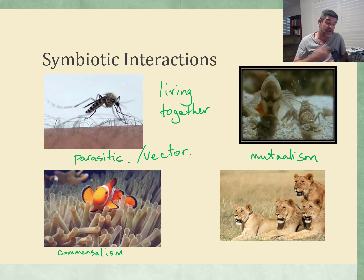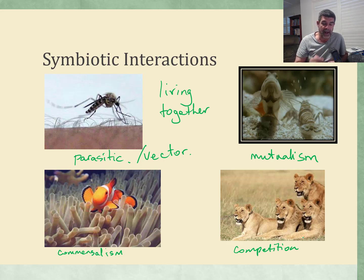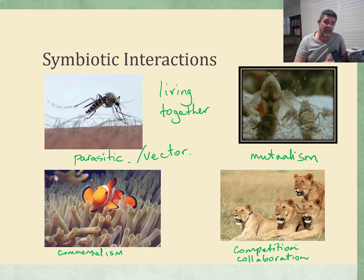So the clownfish benefits, the anemone is neither particularly harmed nor gaining any benefit — that's commensalism. Sometimes where animals are in competition for a resource like prey, that competition can spark collaboration, as seen among pack hunters who work together and share the results. If there's a kill, all individuals involved can eat, usually including other family members as well. These are all examples of symbiotic interactions.